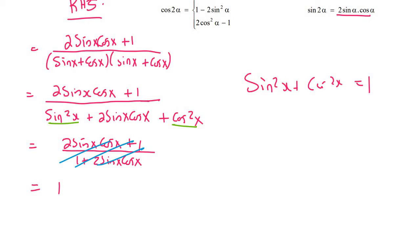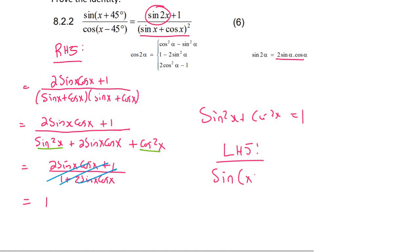Then what I think we should do is just work on the left-hand side, which is sin of x plus 45 over the cos of x minus 45, and we're going to try to simplify that to make it equal to 1.